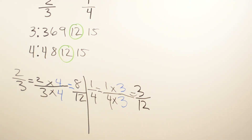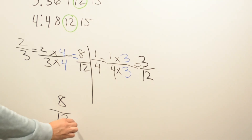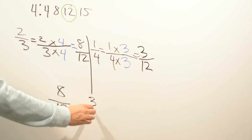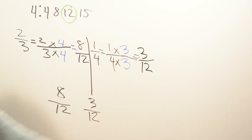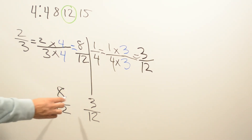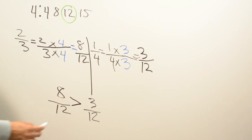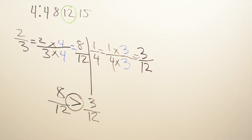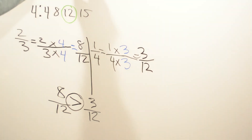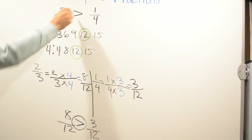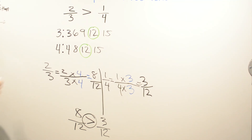Now I compare eight over twelve and three over twelve. Right away you can see that eight is bigger than three, so you put the greater than sign: two thirds is greater than one fourth.